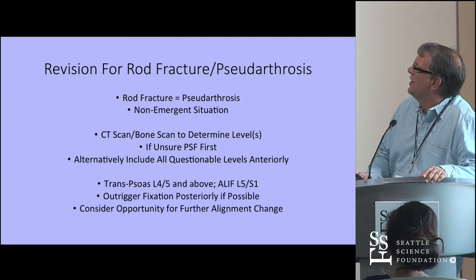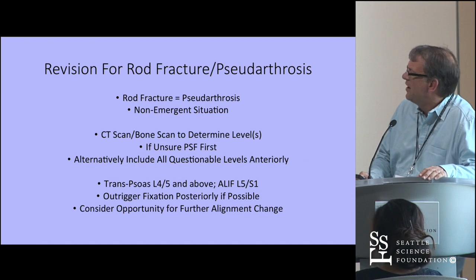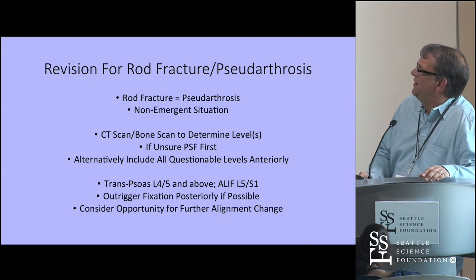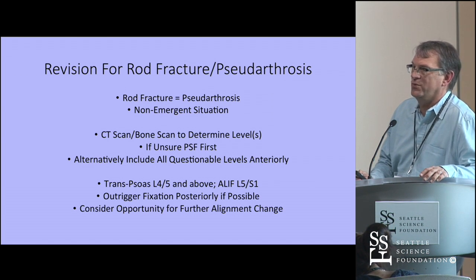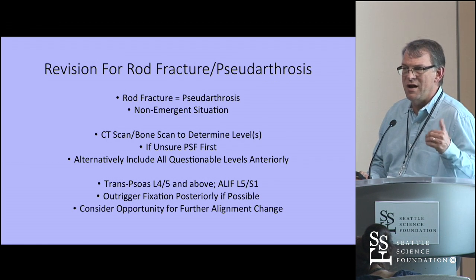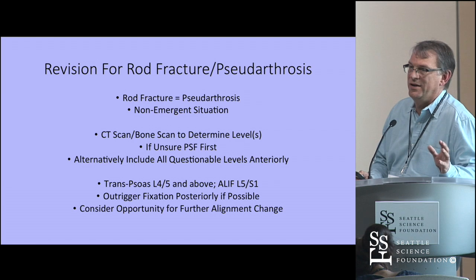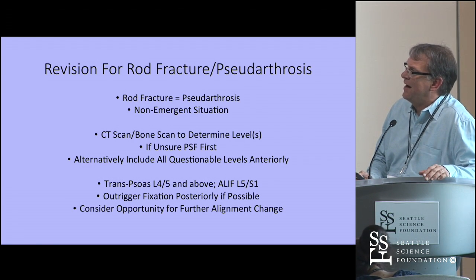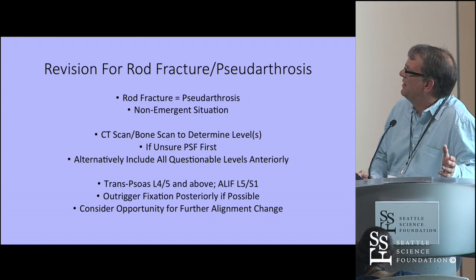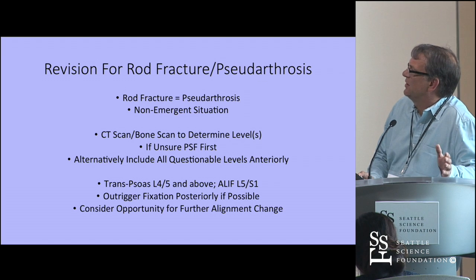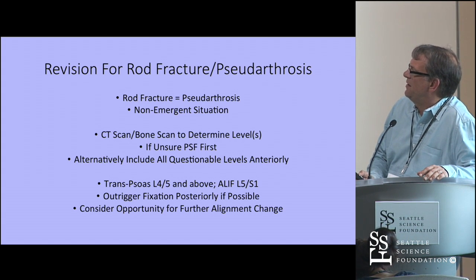When addressing revision for rod fracture and pseudoarthrosis, rod fracture in most cases is a proxy for pseudoarthrosis, meaning there is likely an area that has failed to fuse. Importantly, this is almost always a non-emergent situation with no neurologic emergency, though patients and referring physicians are often alarmed. Some cases settle down with conservative measures — bone stimulator, initiating Forteo, physical therapy — particularly if only one rod is fractured. Reoperation is typically withheld unless both rods have clearly fractured and the patient remains symptomatic.